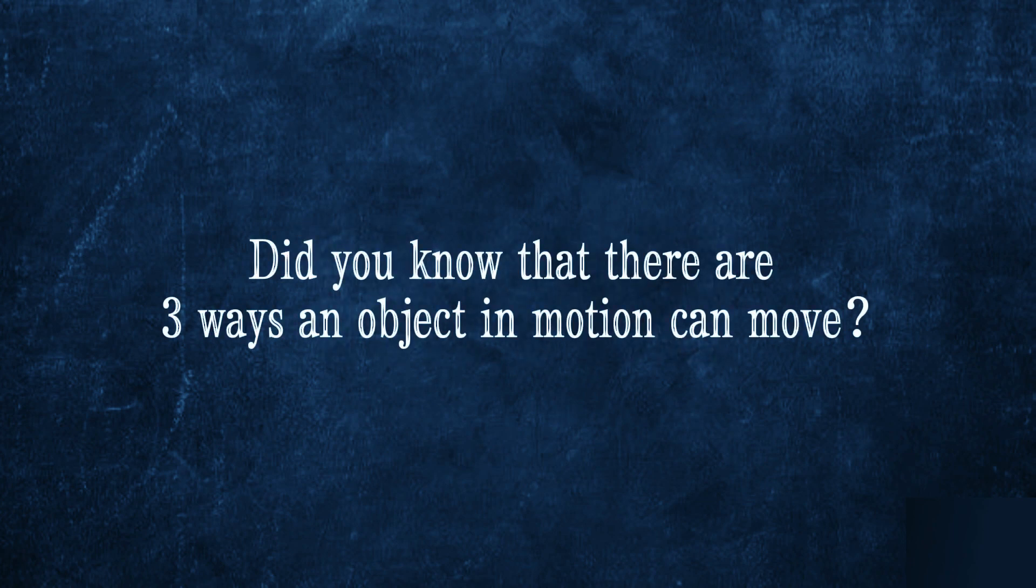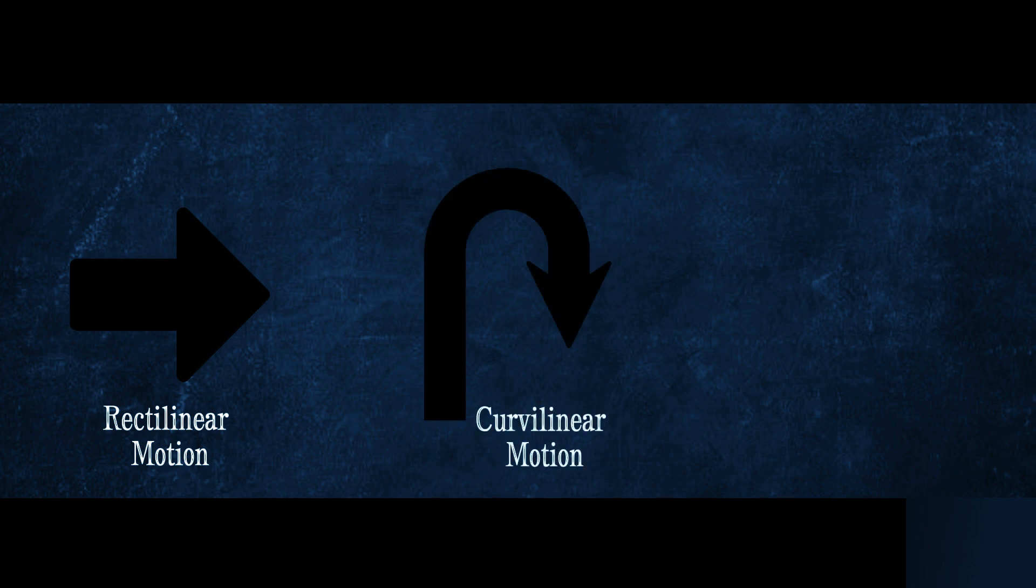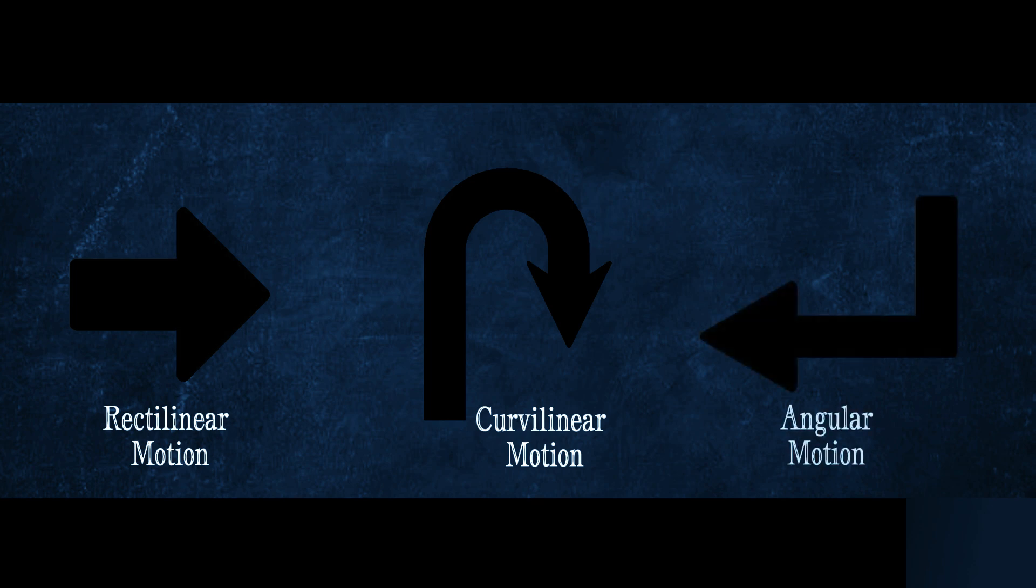Trivia! Did you know that there are three ways an object in motion can move? If an object in motion is moving in a straight line, it is called rectilinear motion. And when it moves in a curvy path, it is called curvilinear motion. The last one is called angular motion. It is when an object in motion moves in an angular way or path.